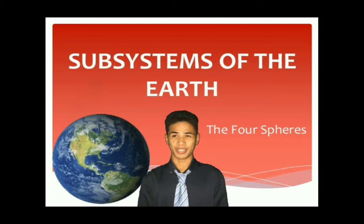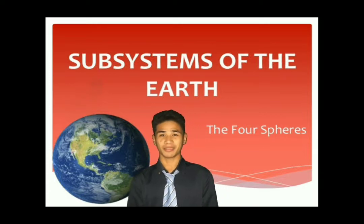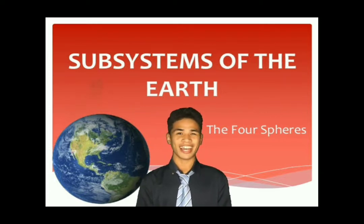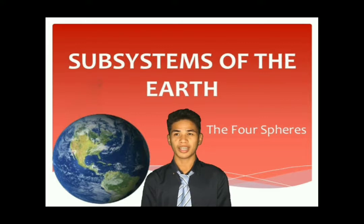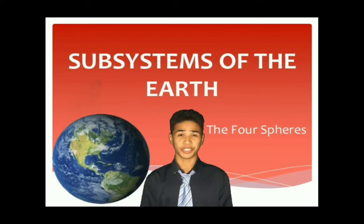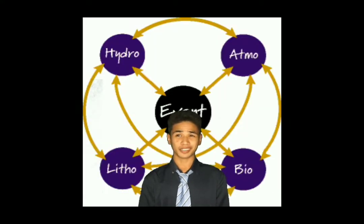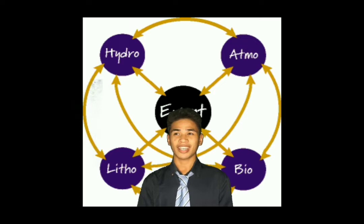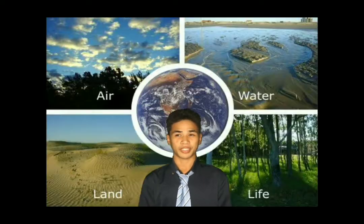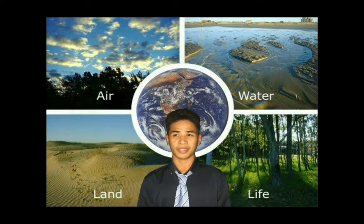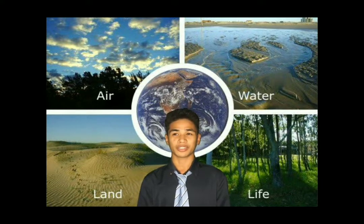Good morning everyone. My name is Kim Tayron Samsung and I am here to present to you the four Earth's subsystems. First, let us talk about what a system is. A system is a collection of interdependent parts enclosed within a defined boundary — the Earth's sphere.